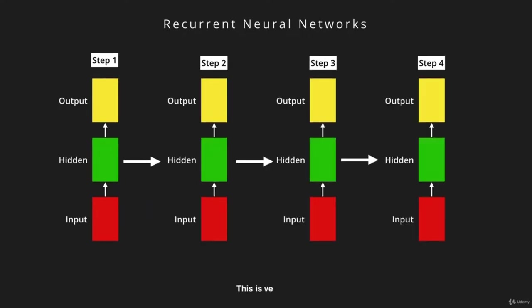To make this diagram even more useful, you can unfold it. In the case of a sentence with four words, the network would look something like this, where each input is a word injected into what we call the state — the memory of the network. The state holds in memory information about every previous input that was introduced into the network. Every state produces an output based on some internal calculations that happen within, which we will cover in great detail later on.